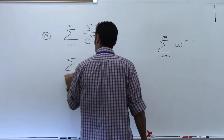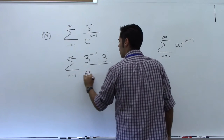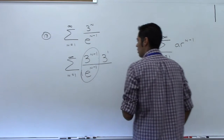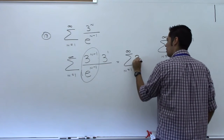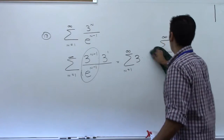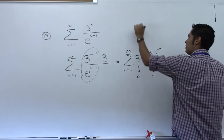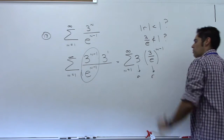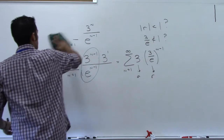Rewriting: sum from n=1 to infinity of 3^(n-1) times 3^1 over e^(n-1). Now both are to the n minus 1 power. Combining: (3/e)^(n-1) with a = 3 out front. But the absolute value of r is 3/e. Since e is approximately 2.718, 3/e is greater than 1 — so it diverges.